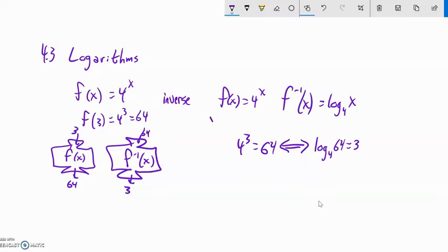There's a couple ways to think about logarithms. Like, log base 4 of 64 is asking a question. What it's asking is 4 to what power gives 64, or is 64? And the answer is 3, because 4 to the 3rd is 64.